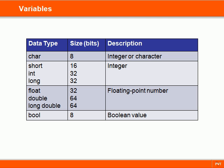In C++, the exact size and range of the data types aren't fixed. Instead, they are dependent on the system we compile for. The sizes shown in this table are those found on most 32-bit systems.